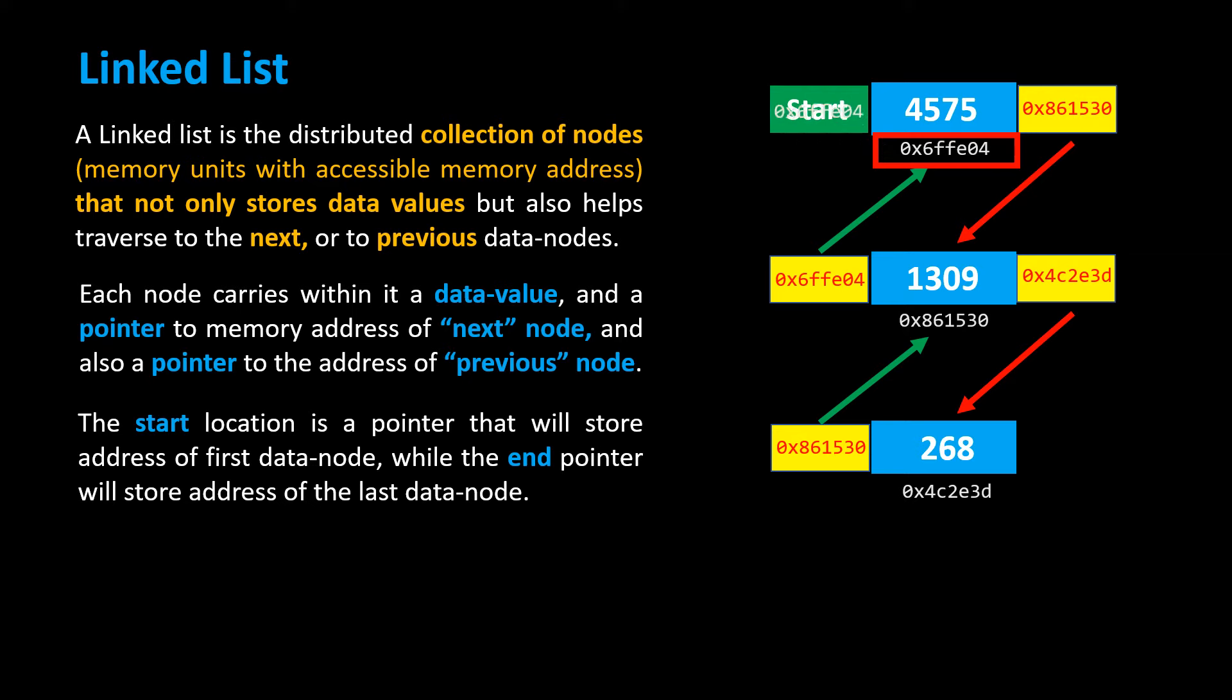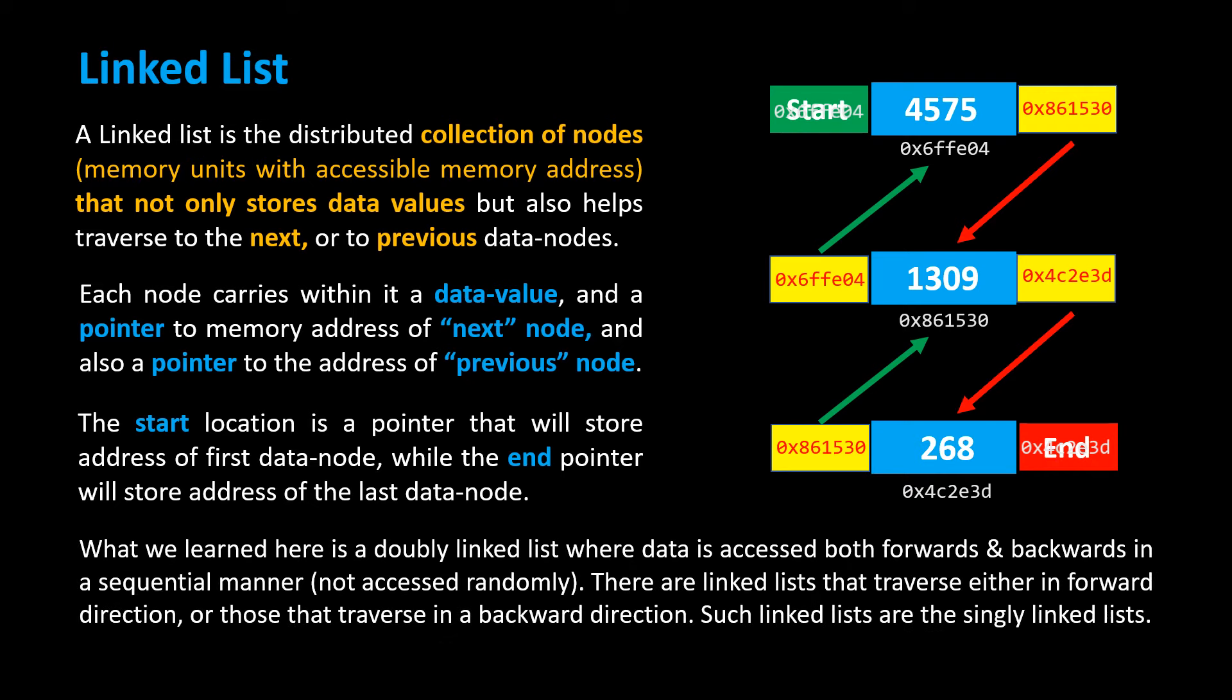While the end pointer will store address of the last data node. What we learned here is a doubly linked list where data is accessed both forwards and backwards in a sequential manner.